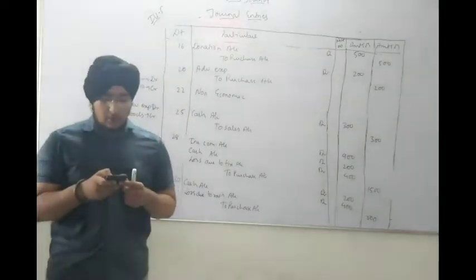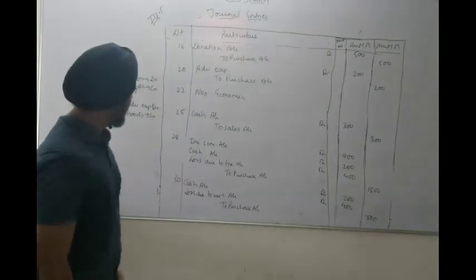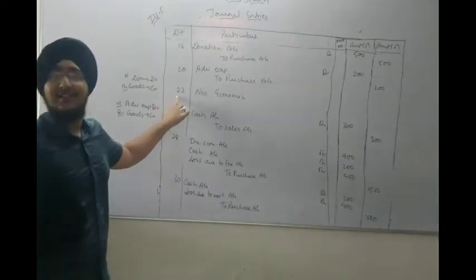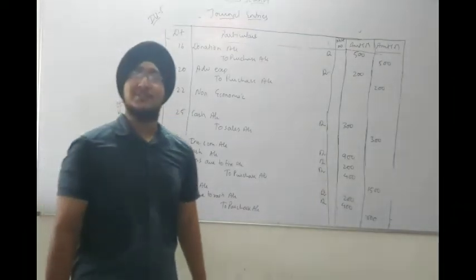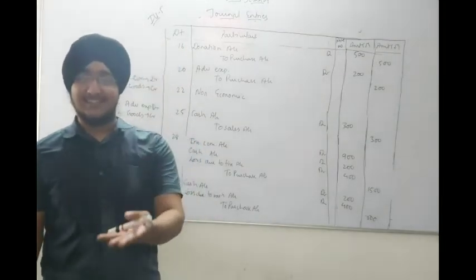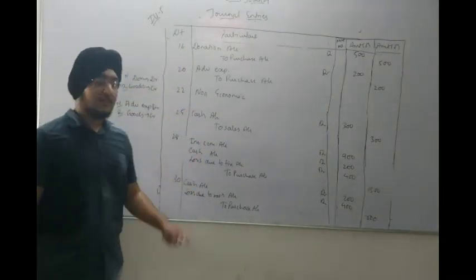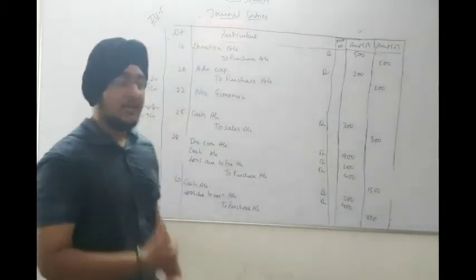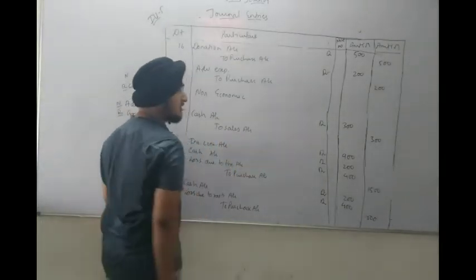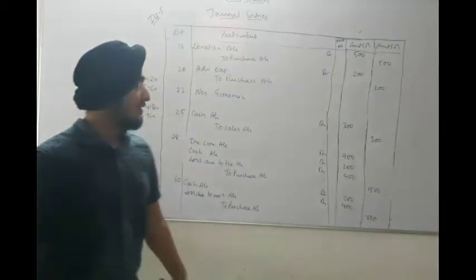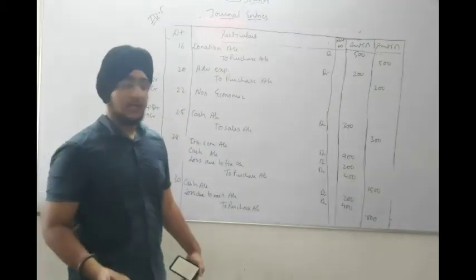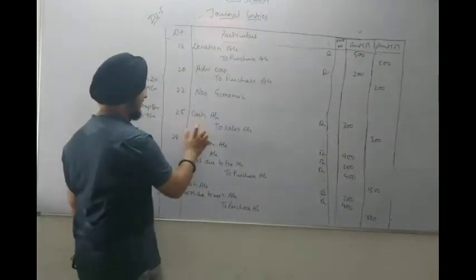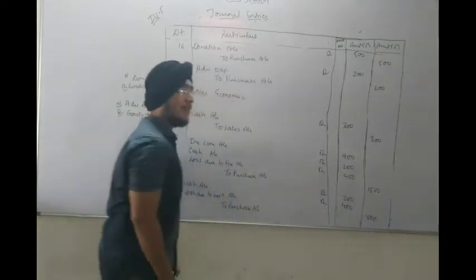Next transaction: Goods received as free sample worth Rs.25 are sold for Rs.300. Cash comes in — Rs.300 received. The goods were received free so there's no cost, but we sold them. Journal entry: Cash account debit 300 to Sales account 300, because goods go out and cash comes in.